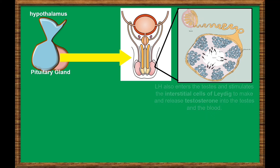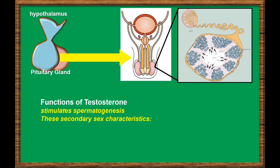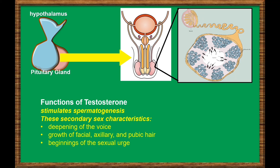The main functions of the hormone testosterone are the following: it stimulates spermatogenesis and also drives the secondary male sexual characteristics, such as deepening of the voice, the growth of facial, axillary, and pubic hair, and the beginnings of the sexual urge.